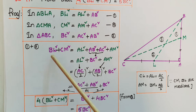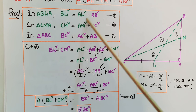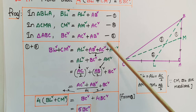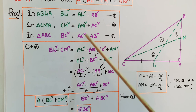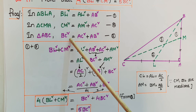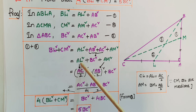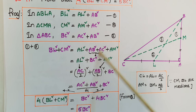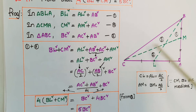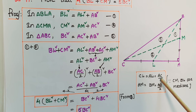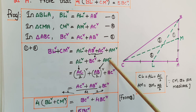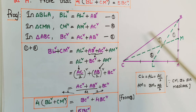Now adding the first and second equations: BL² + CM² = AL² + AB² + AM² + AC². Since AB² + AC² = BC² from the third equation, this becomes AL² + BC² + AM². Now AL = AC/2 because BL is a median, so (AC/2)² + BC² + AM², and AM = AB/2.